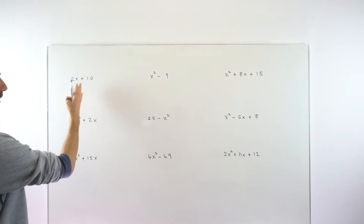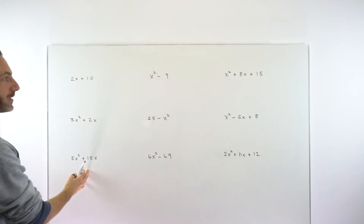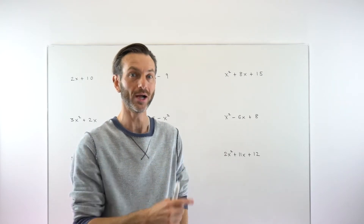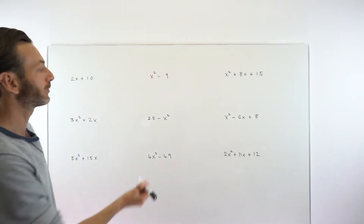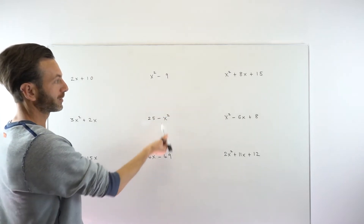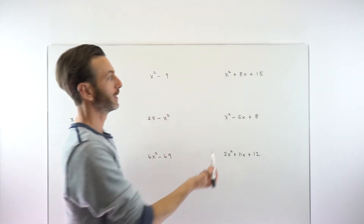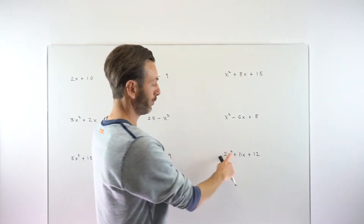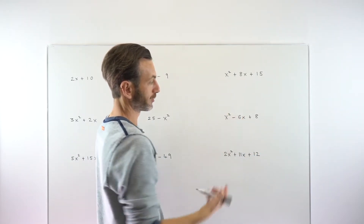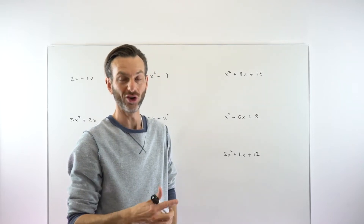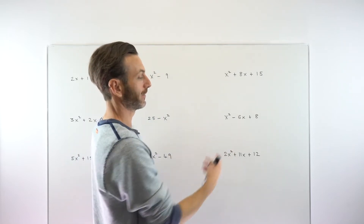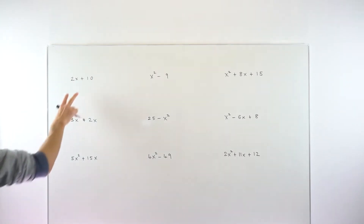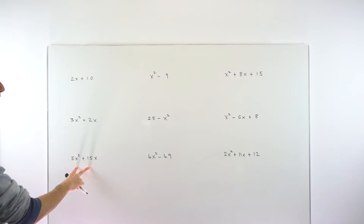The three different types are: common factor type factorising — that's when you identify a common factor between the terms and use that outside one bracket; then you've got a thing called a difference of two squares; and then you've got trinomials. 'Tri' means three, so one, two, three terms in descending powers of x. The first type to really look out for are the common factors.